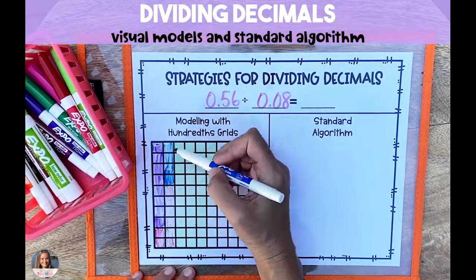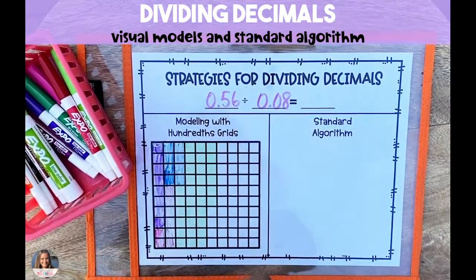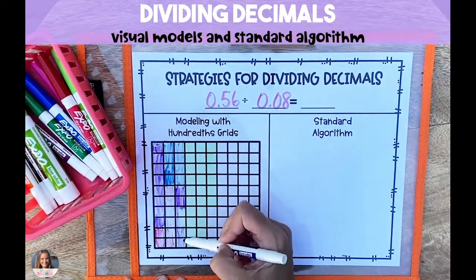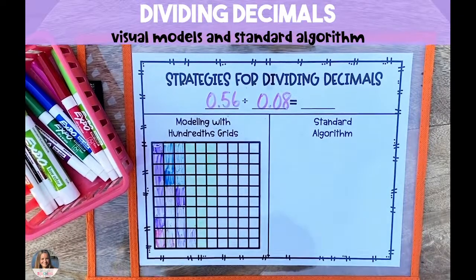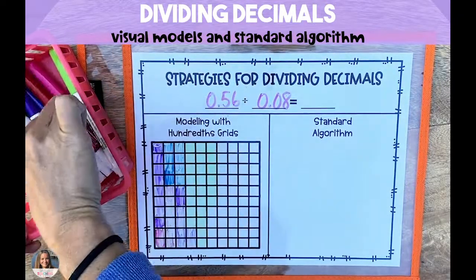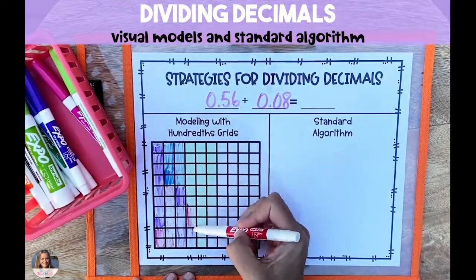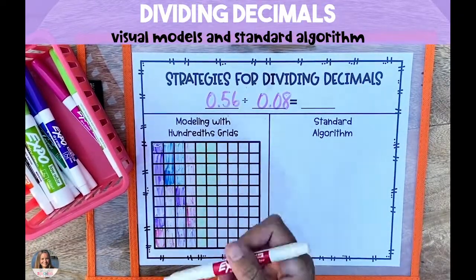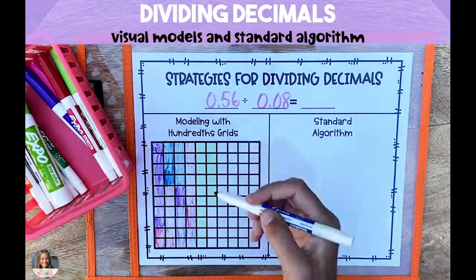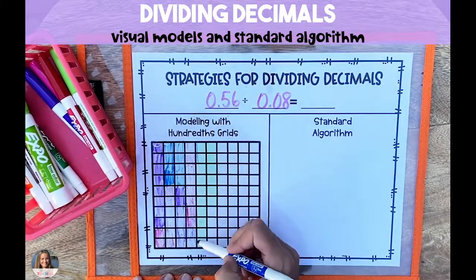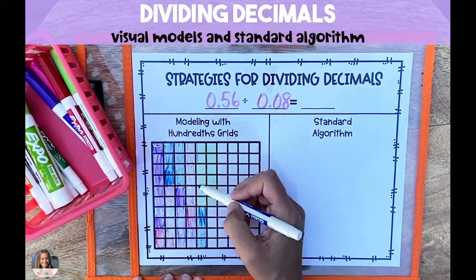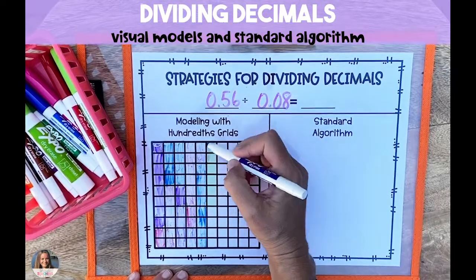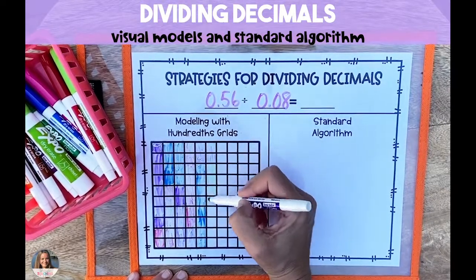This method works a lot better when you're shading in on paper. So if you're using a dry erase pocket, another option is to circle groups of 8 hundredths until you've circled as many groups as you can of the 56 hundredths.